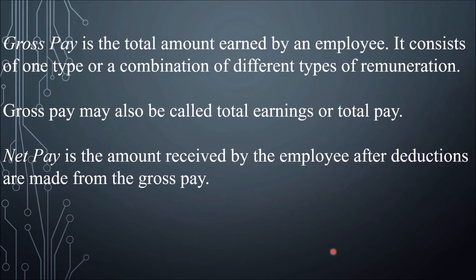Gross pay is the total amount earned by an employee. It consists of one type or a combination of different types of remuneration. Gross pay may also be called total earnings or total pay, and it is sometimes the amount you see stated in your contract.